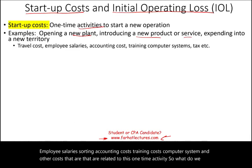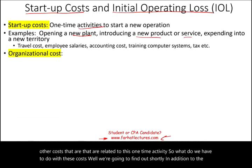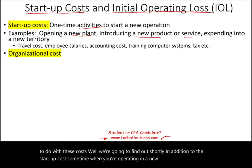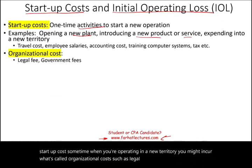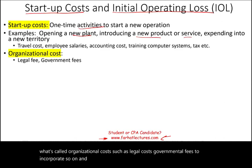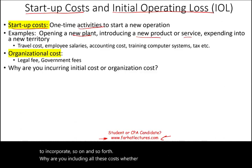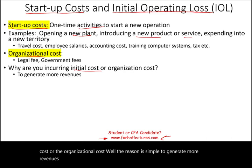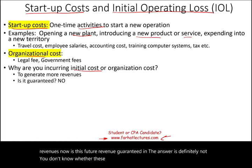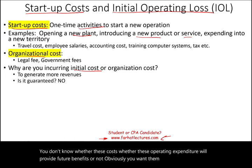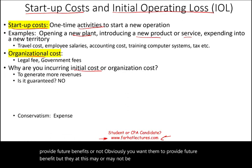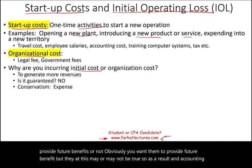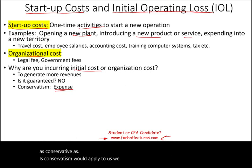So what do we have to do with these costs? In addition to the startup costs, sometimes when you're operating in a new territory, you might incur what's called organizational costs, such as legal costs, governmental fees to incorporate, and so on. The reason you're incurring all these costs is simple: to generate more revenues. Now, is this future revenue guaranteed? The answer is definitely not. You don't know whether these operating expenditures will provide future benefits or not. So as a result, in accounting, conservatism would apply — we will expense them. Simply put, for GAAP purposes, we will expense them.